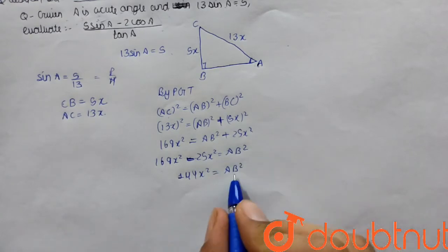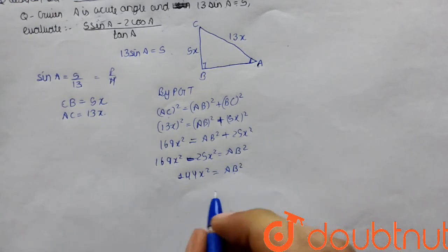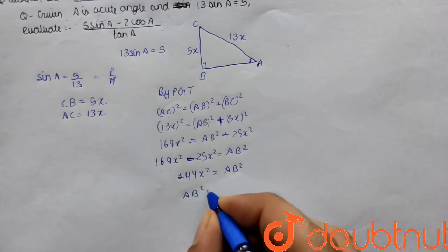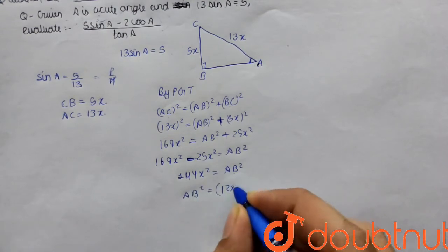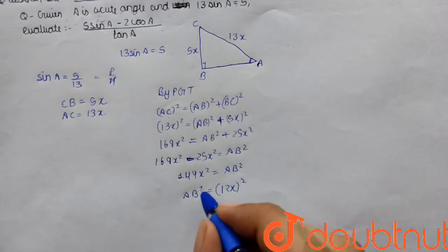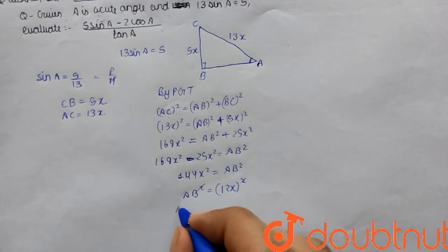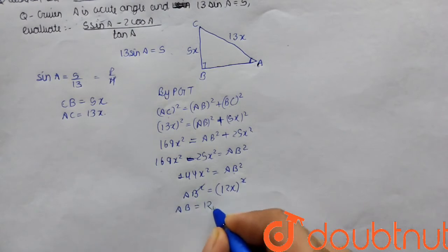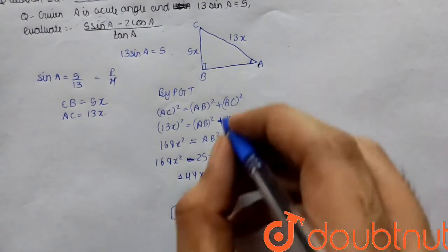We need the value of AB, not AB squared. So we take the square root of 144x², and AB equals 12x.